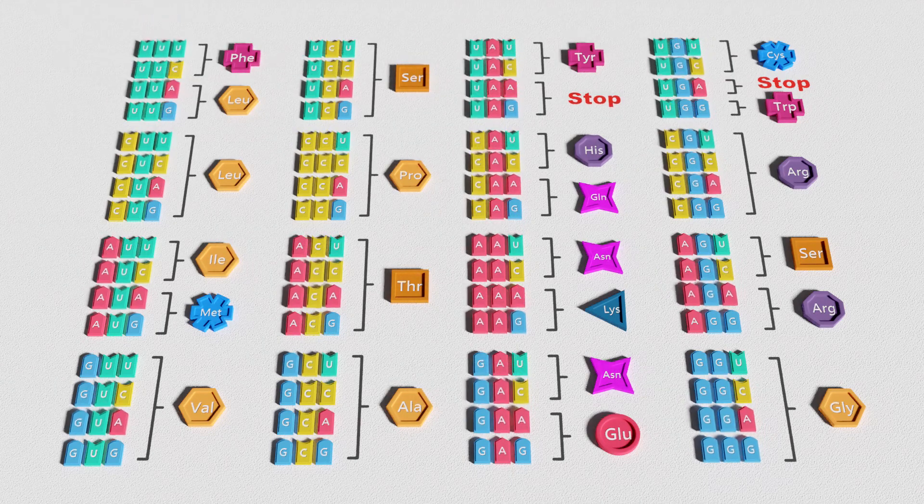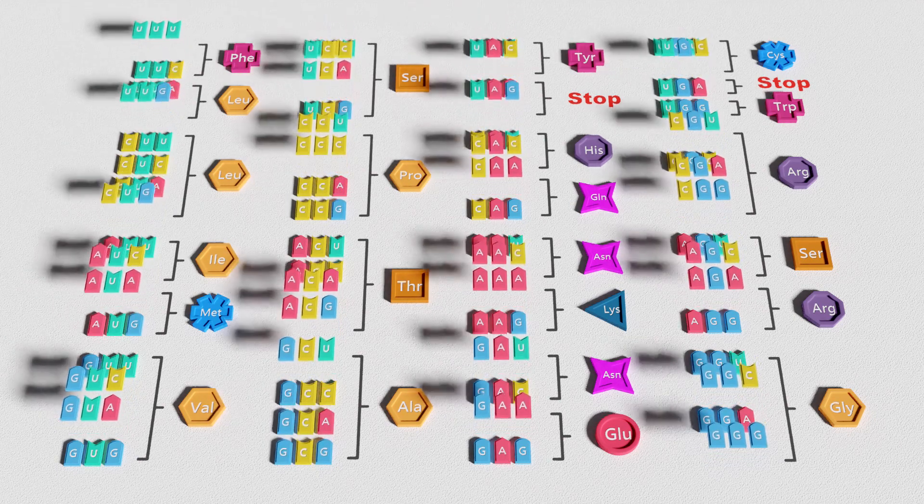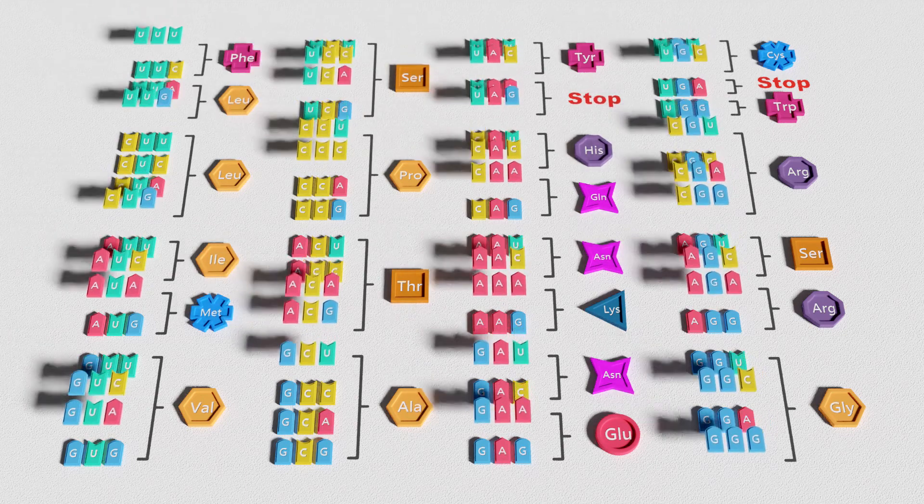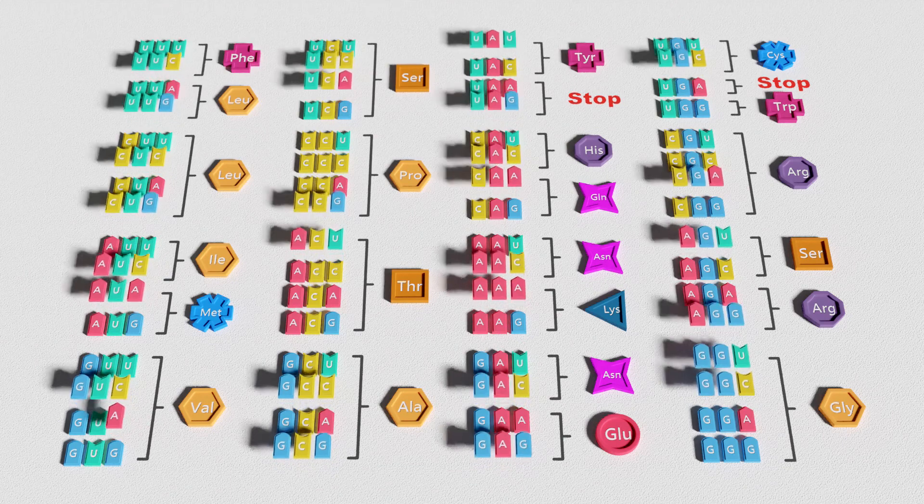This codon bias varies by organism, and its purpose is an active field of research. In more complex organisms, selective pressure for increased translation efficiency and accuracy is believed to be a reason for this favoring of some codons, but much is still unknown.